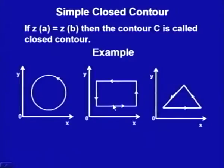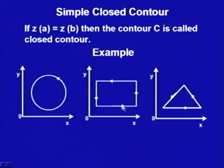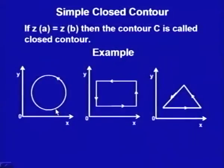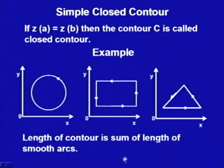From this, one thing is clear: for contours, z'(t) is piecewise continuous and not zero at any point, which says z'(t) is integrable over the entire range t = a to b. This means the length of a contour can also be found. Since a contour is the join of simple arcs which are differentiable, the length of a contour — if it is a single piece — is simply the integral of |z'(t)| from a to b. If it is a join of many smooth arcs, it is the sum of the lengths of those arcs.